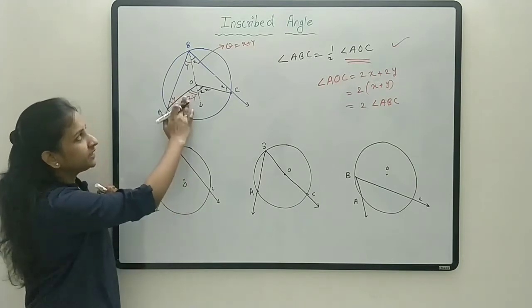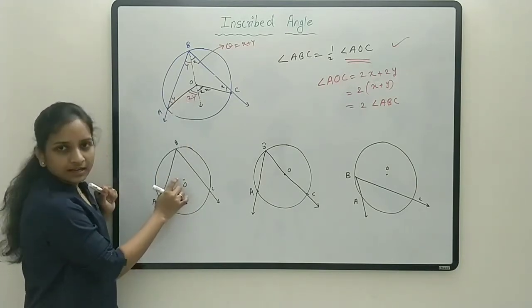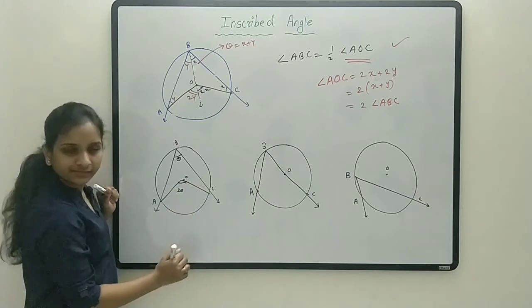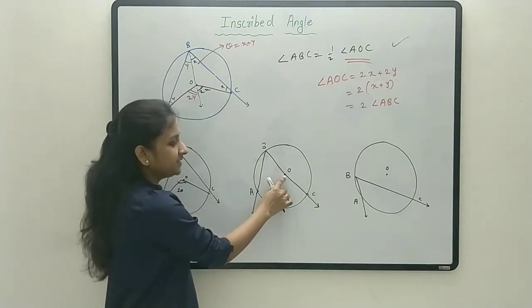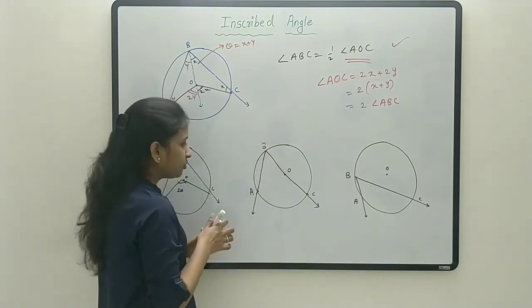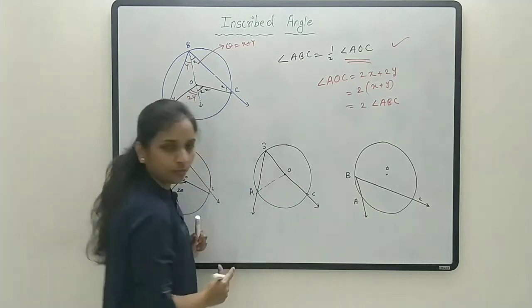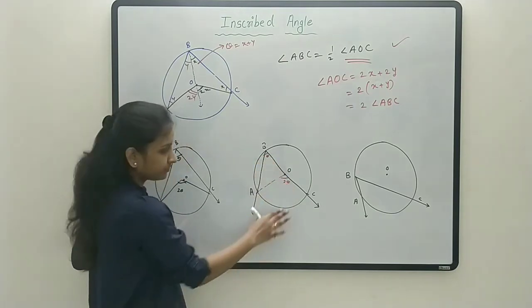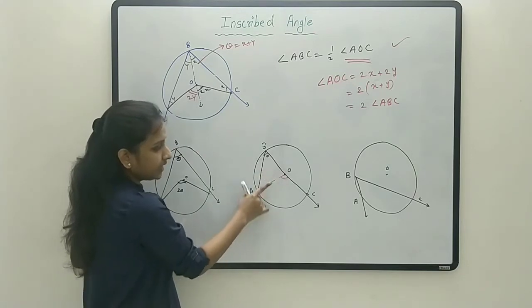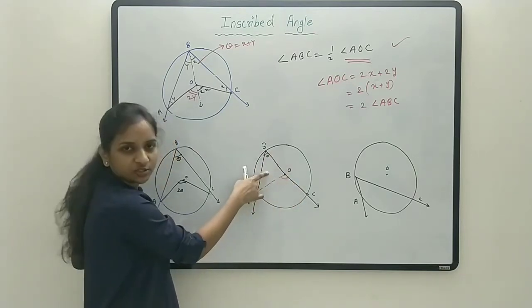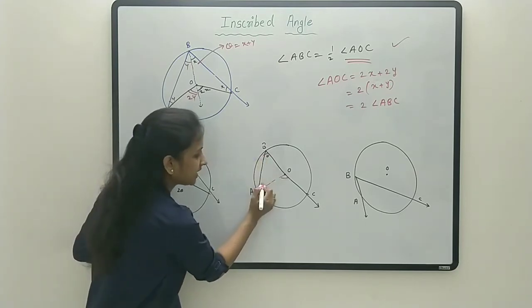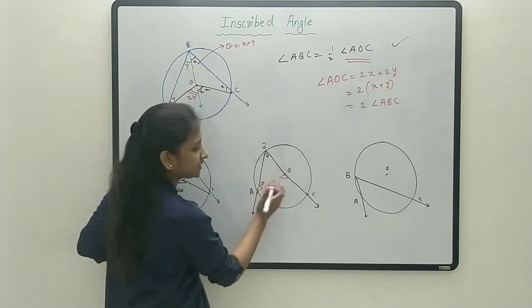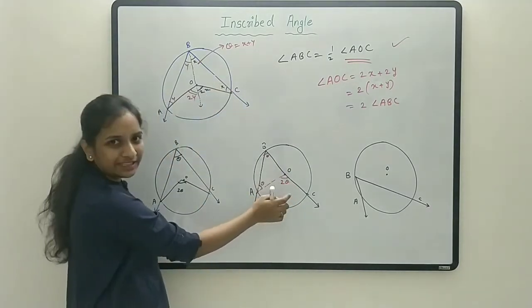We just proved Case 1, where the center is inside. Now let's prove Case 2 — when the center lies on the inscribed angle. We join segment AO. In triangle BOA, OB and OA are both radii, so it is isosceles. If this angle is theta, this angle is also theta. The exterior angle at O is 2 theta, so the theorem holds true in this case as well.